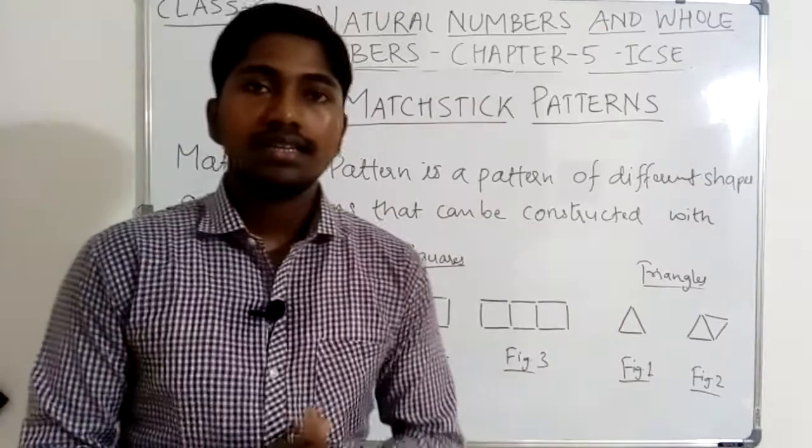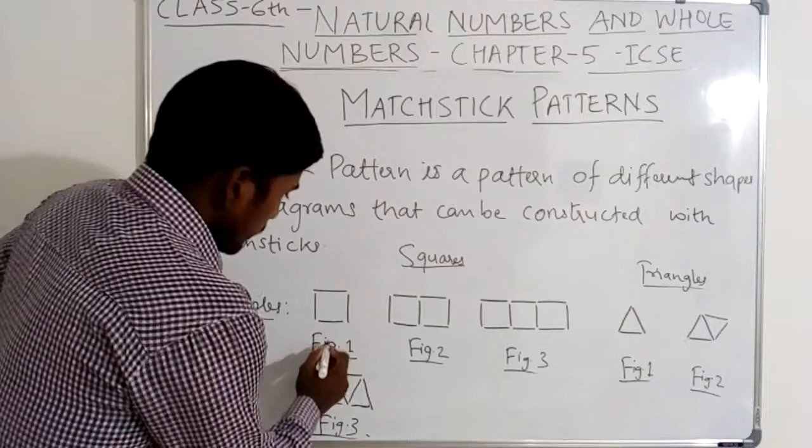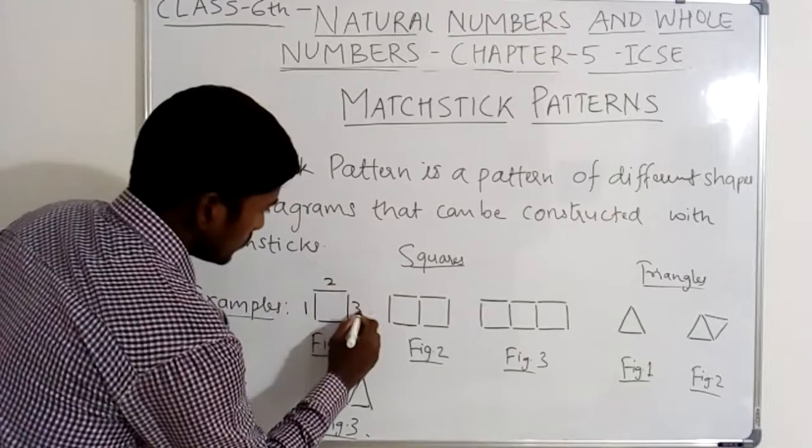Here is an example. Figure 1 is made using mastic. How many mastic is used? One, two, three, four. Four numbers of mastic are used in figure 1.